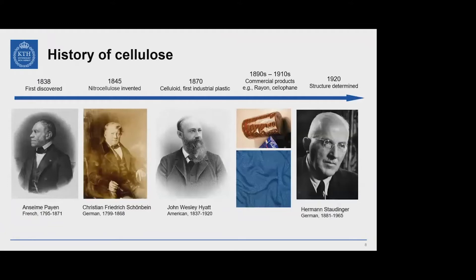In 1838, cellulose was first discovered by a French chemist, and in 1845, natural cellulose — as you know, the raw material for explosives — was invented. After several decades, there was a milestone: the so-called first industrial plastic, celluloids, were invented. And after several decades again, commercial products like rayon cellulose were invented one by one.